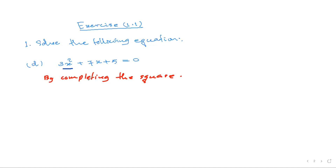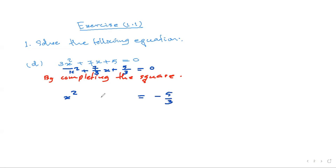So we have x squared equal to 0. We can do 5/3 minus 5/3, then we can do 7/3 plus 7/3 to 4 is equal to 7/3.